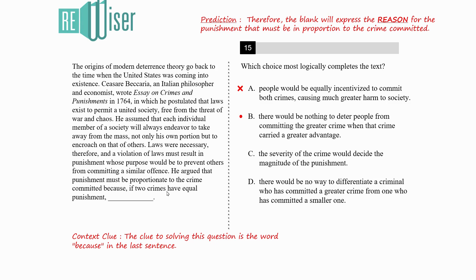Moving on to Option C: the severity of the crime would decide the magnitude of the punishment. Option C doesn't give a reason why punishment must be proportionate to the crime, so it can be eliminated. Finally, Option D states there would be no way to differentiate a criminal who committed a greater crime from one who committed a smaller crime. Option D is also not the best option, as differentiating between criminals of varying degrees is clearly irrelevant to the context here. So D is eliminated.